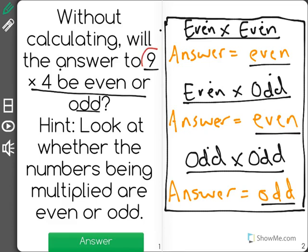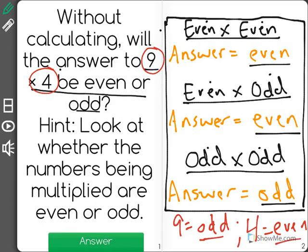Well here we have the numbers 9 and 4. 9 is an odd number, but 4 is an even number. So looking at our chart, you see we are multiplying an odd number times an even number right here, meaning that your answer will be even.